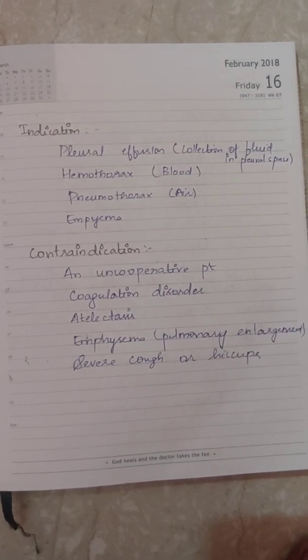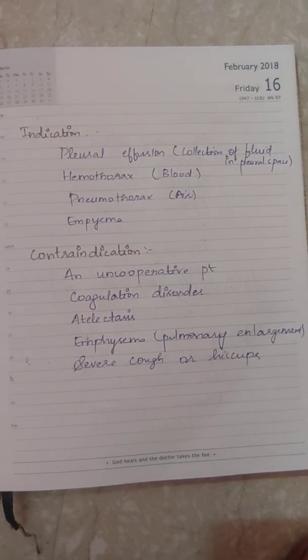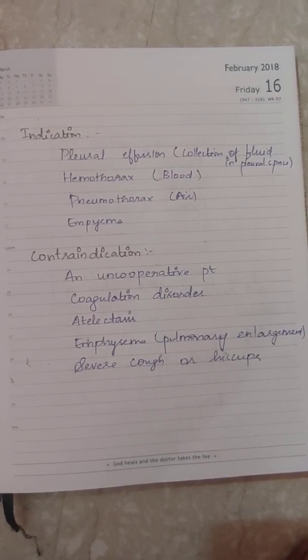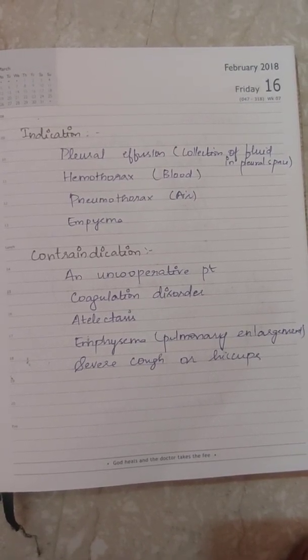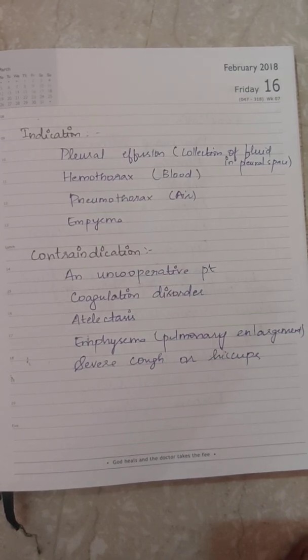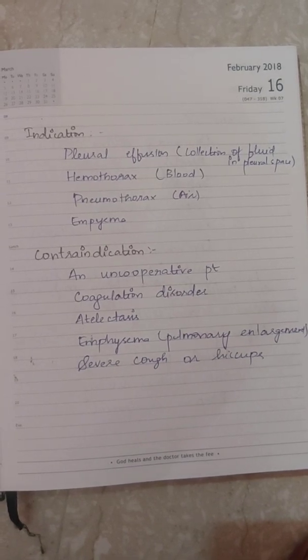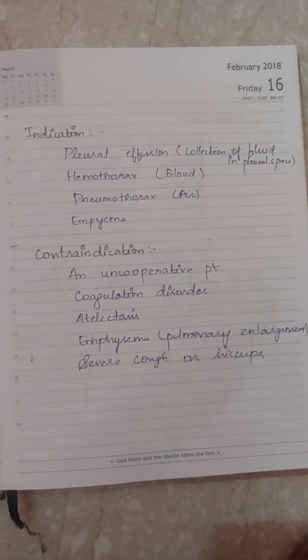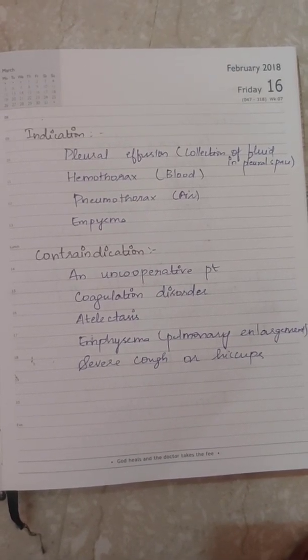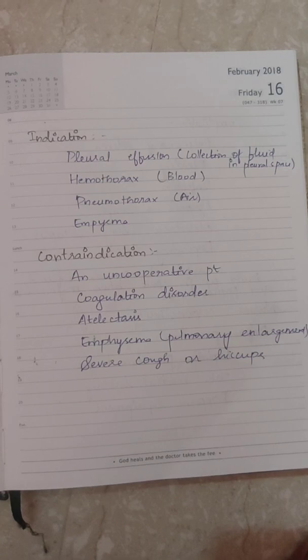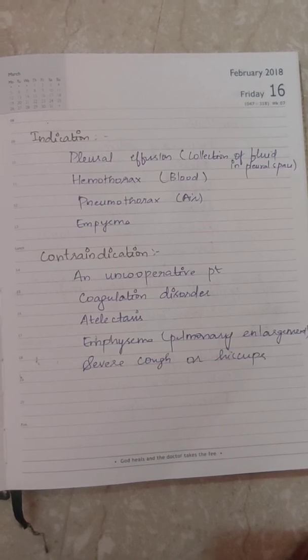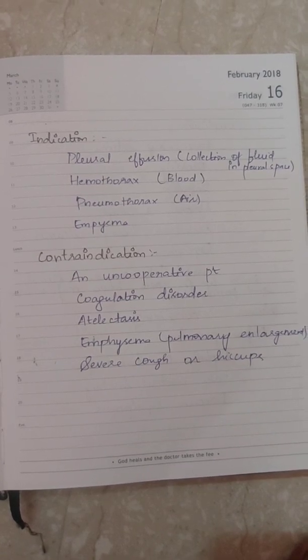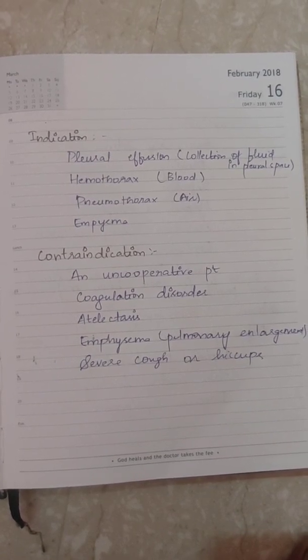The indications for thoracentesis include: pleural effusion, which is a collection of fluid in the pleural space; hemothorax, which is blood collection; pneumothorax, which is air collection; and empyema.